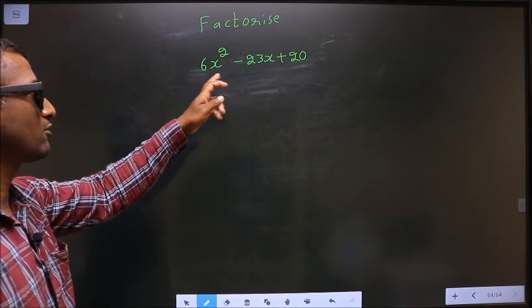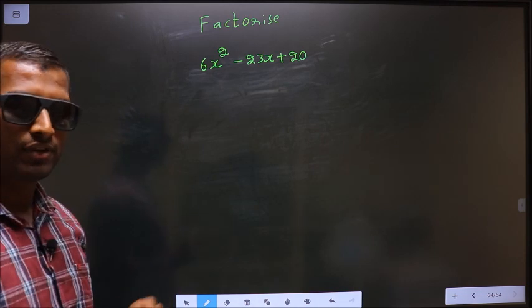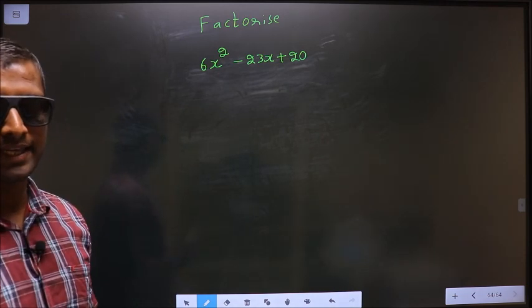Factorize 6x square minus 23x plus 20. To factorize any quadratic equation,